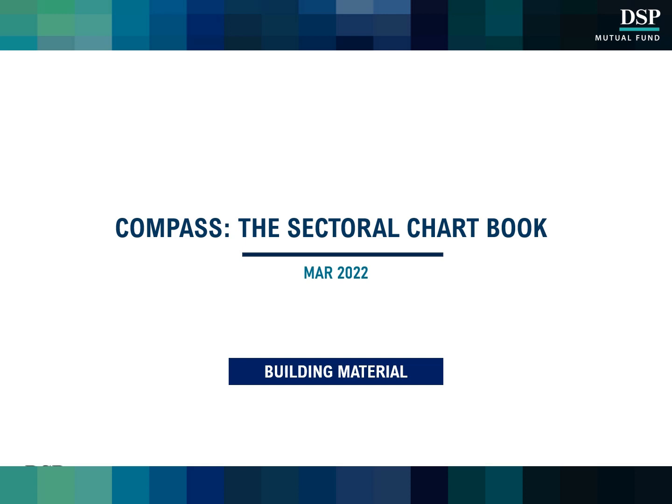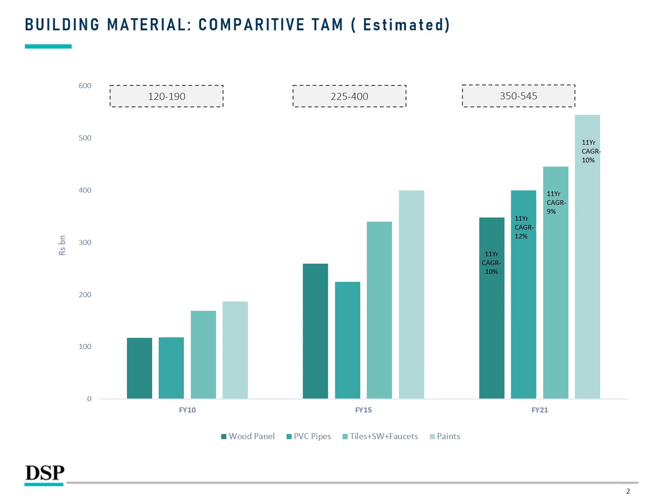Let us first understand and classify the Building Materials category. Any material that is used in construction of a house can be classified as Building Materials, with multiple subcategories. The sub-segments include Paints, Wood Panel, PVC Pipes, and Tile Sanitary Ware Faucets. The estimated total addressable market size of this segment ranges from about Rs 350 billion to about Rs 545 billion, with Paints being at the upper end at Rs 545 billion.